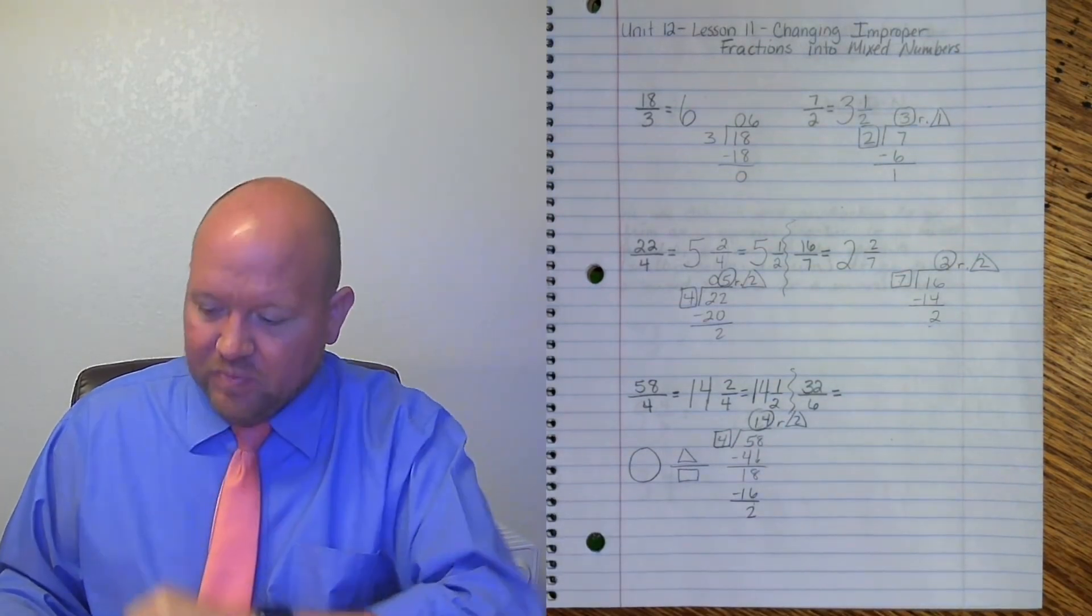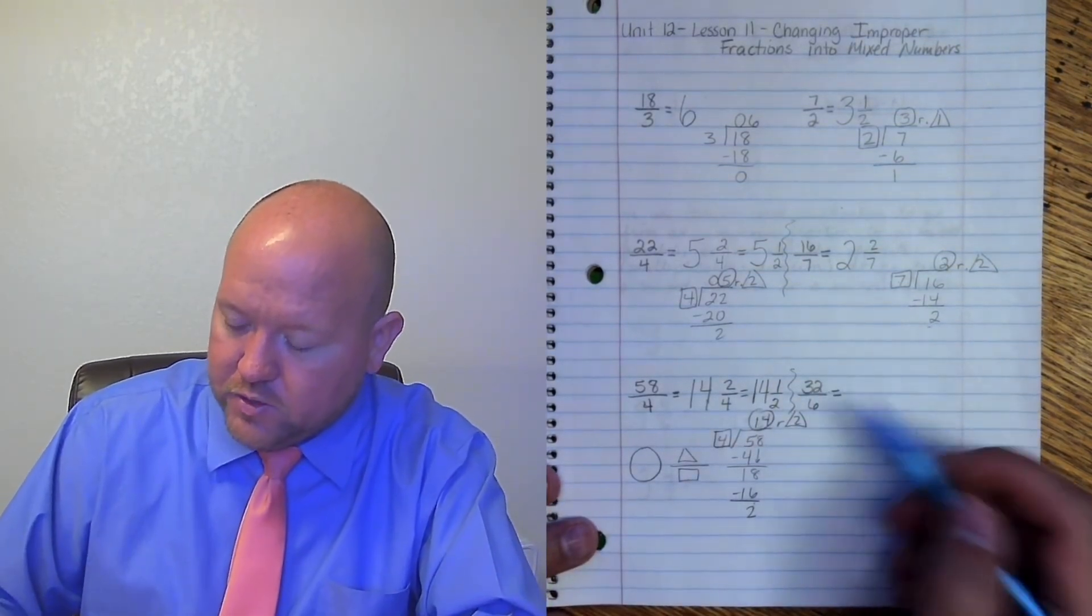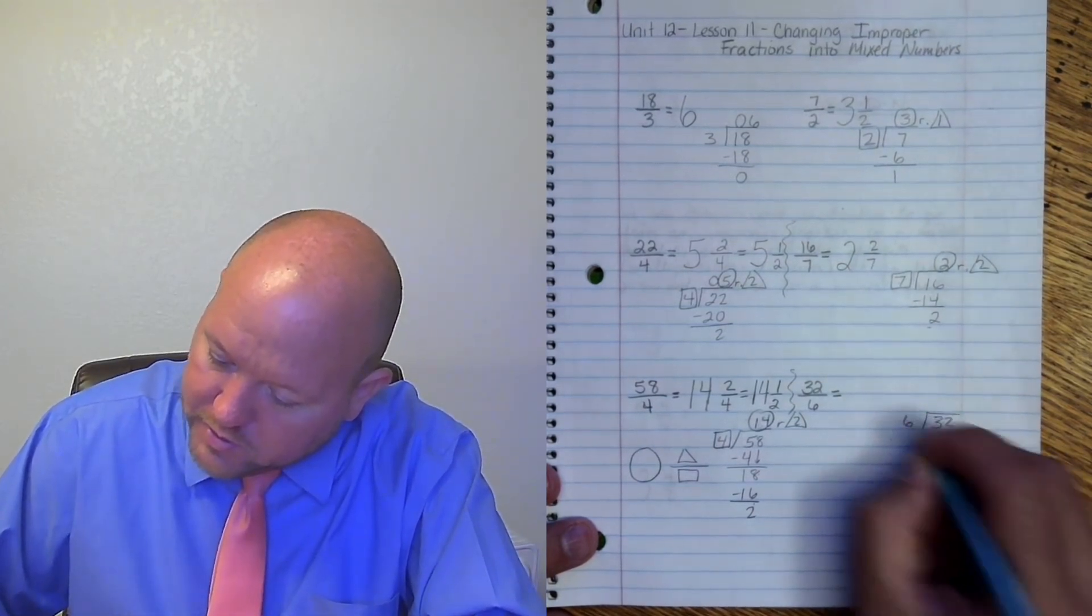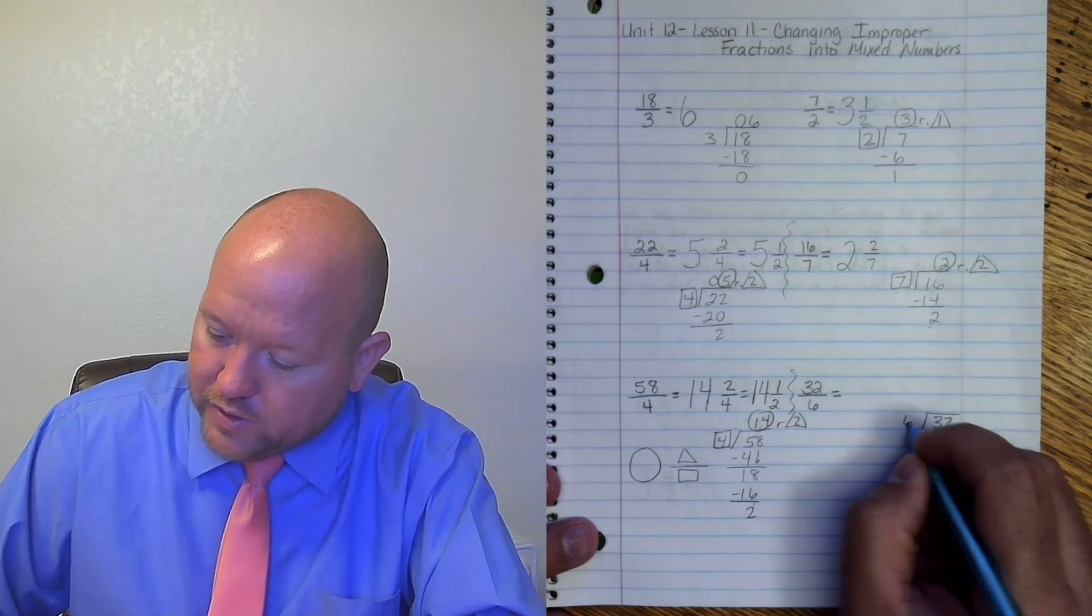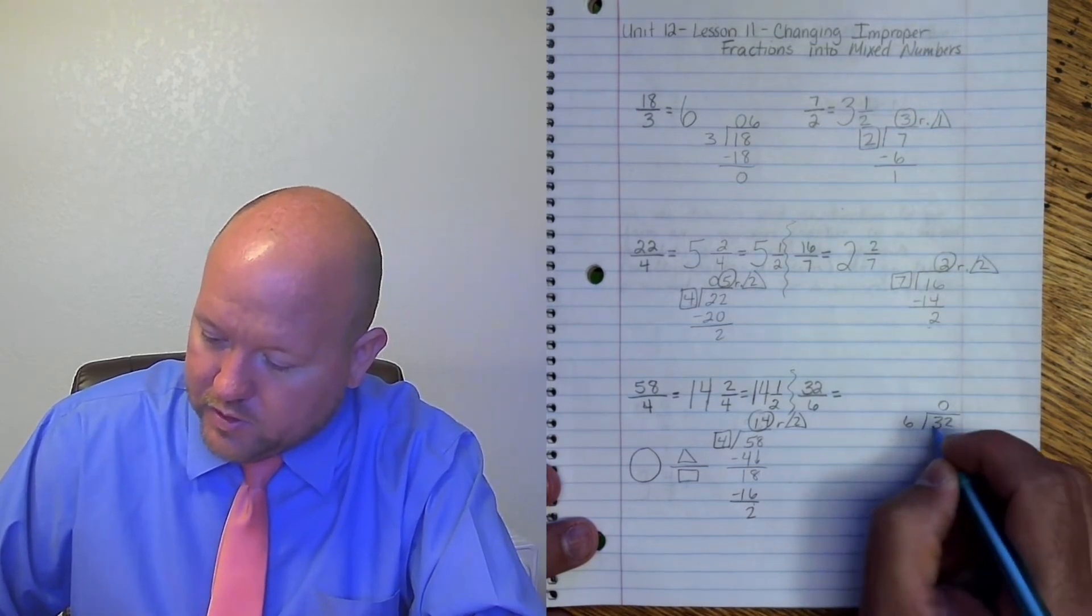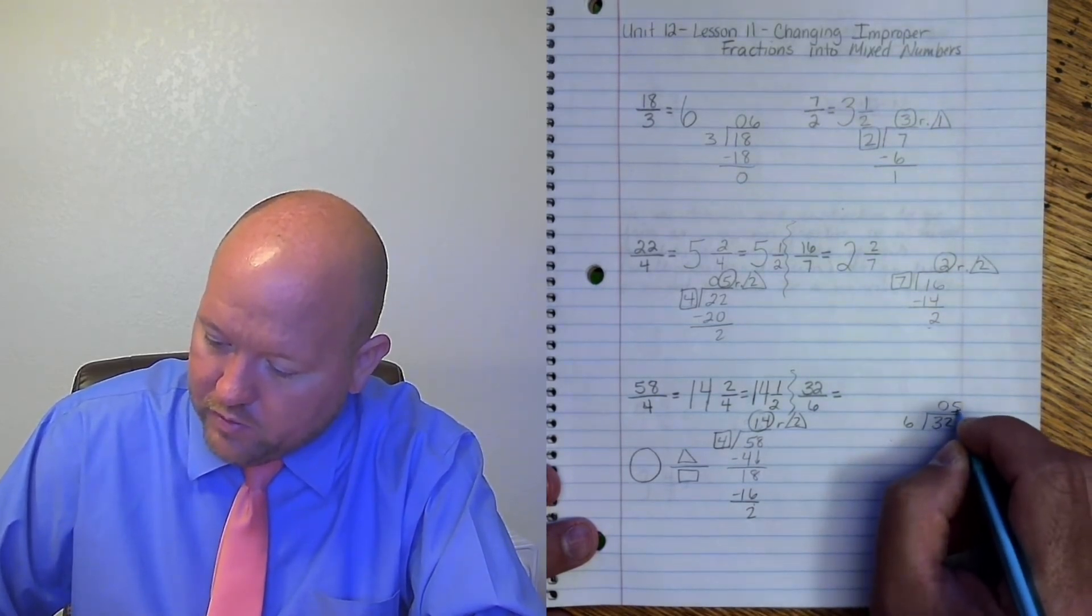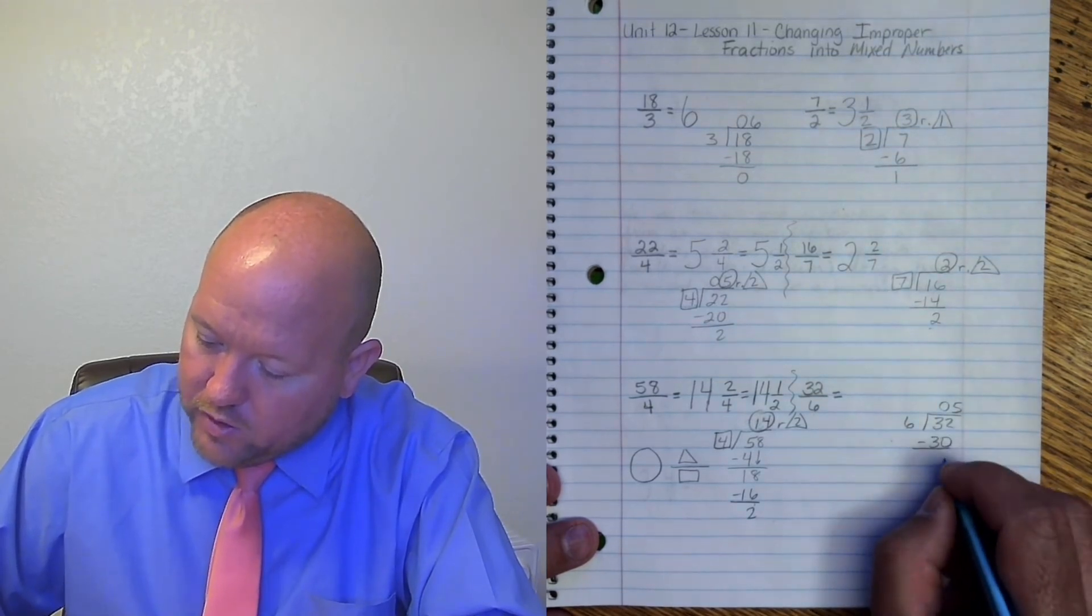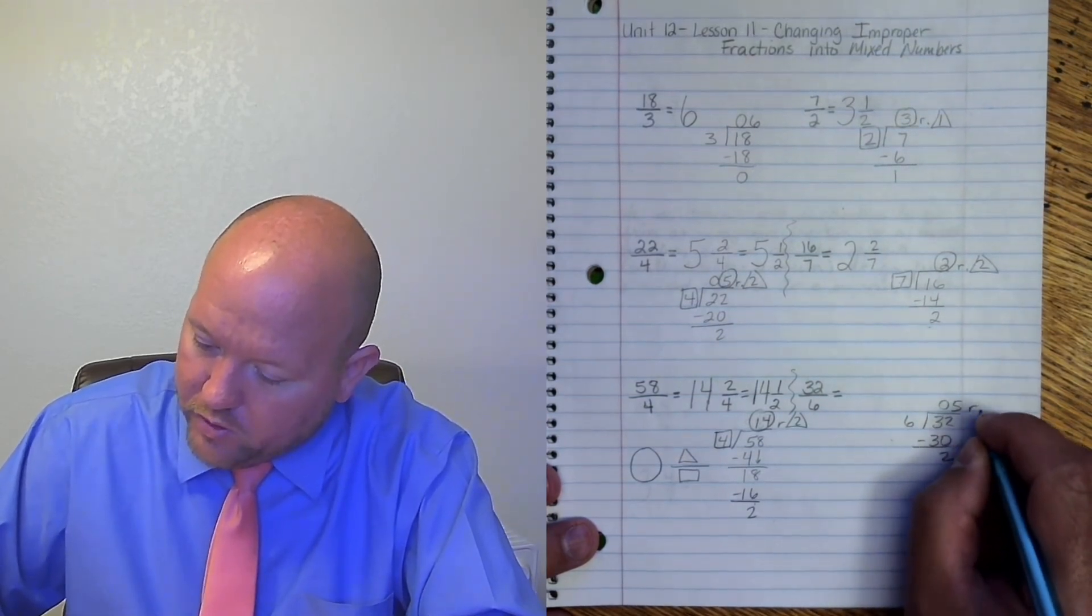And the last one, 32 sixths. So 32 divided by 6. 6 goes into 3 zero times. 6 goes into 32 five times. 5 times 6 is 30. 32 minus 30 is 2. Remainder 2.